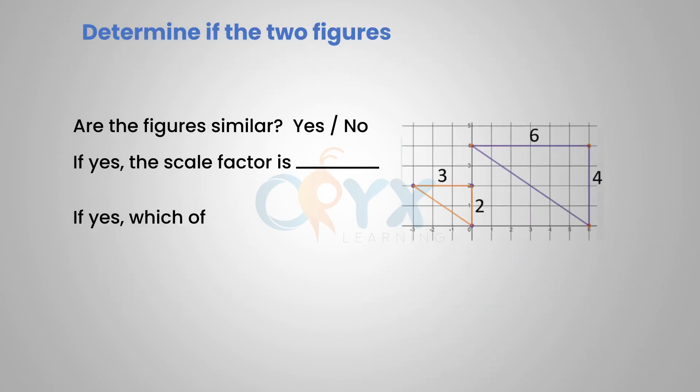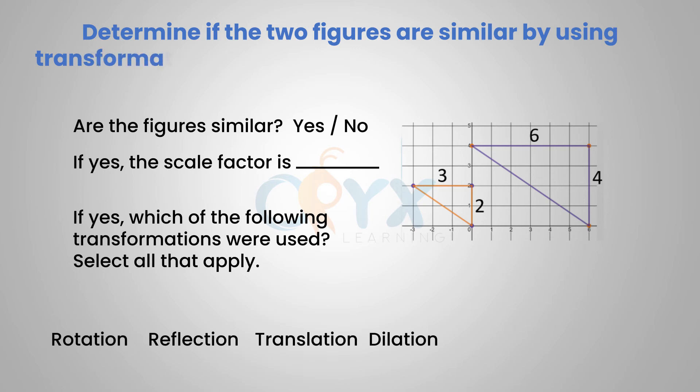Determine if the two figures are similar by using transformations. If the figures are similar, fill in the blank below. Let's look at the orange triangle first. The orange triangle has a height of 2 and base of 3. The purple triangle has a height of 4 and a base of 6.